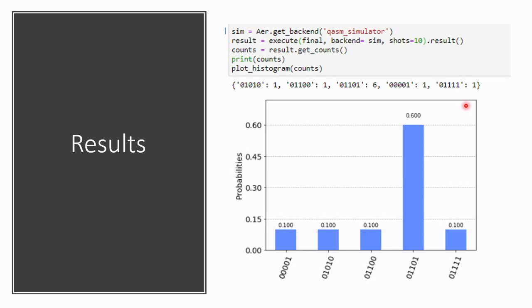Let us see how the results look. We implemented the circuit and executed it in a quantum computer simulator and the results are very promising. I ran the simulation 10 times and out of 10 times, six times I got the answer 1101 — which is what we were trying to find. In a normal algorithm you need to do it 16 times or at least 8 times; over here I ran it for 4 rounds and with 60% probability I'm getting the answer 1101.